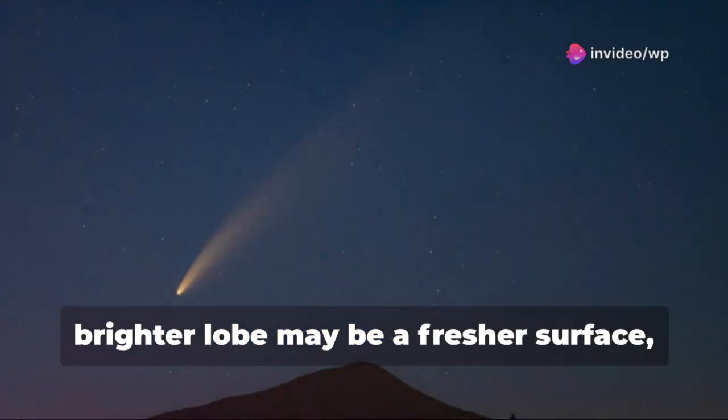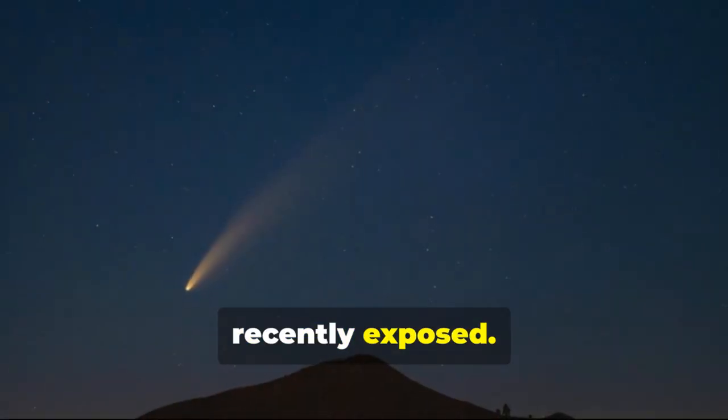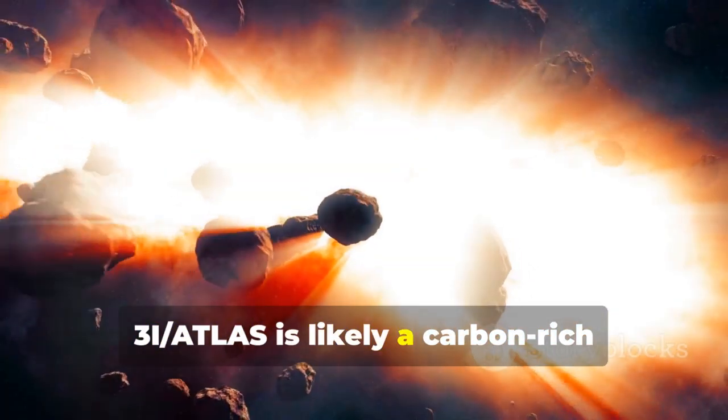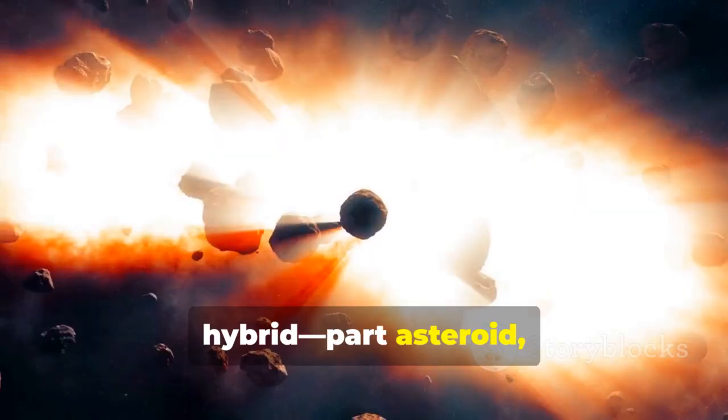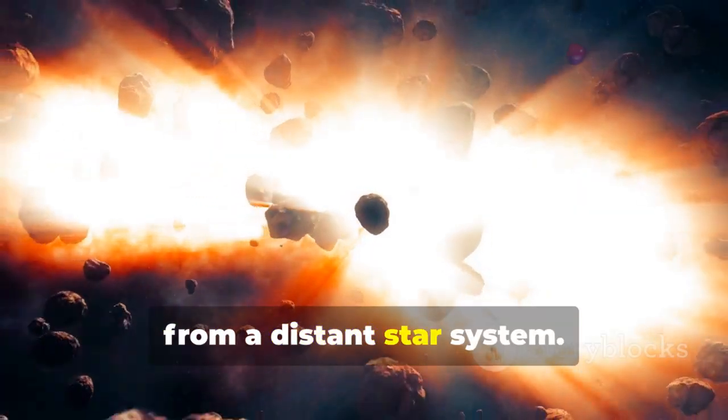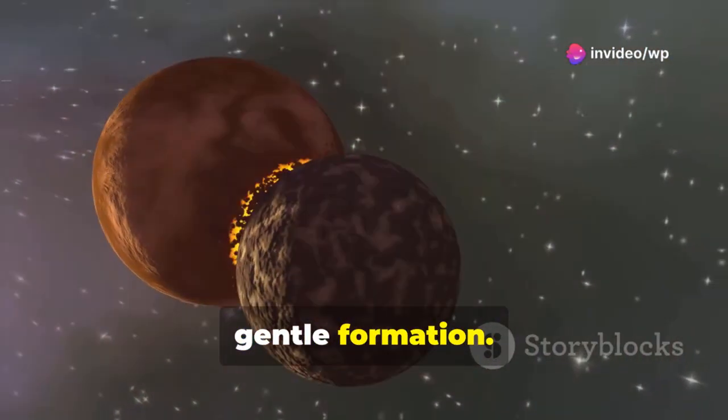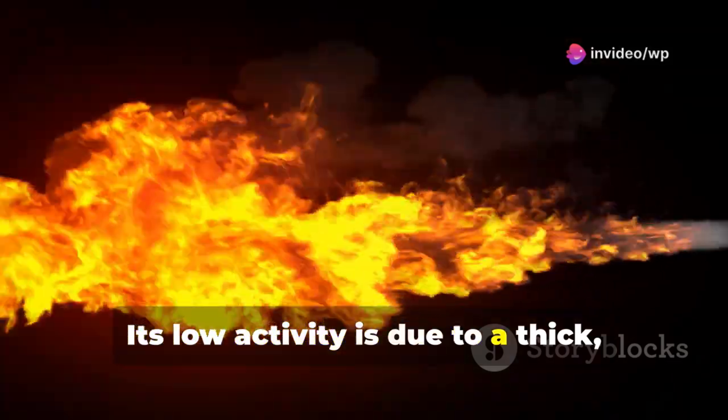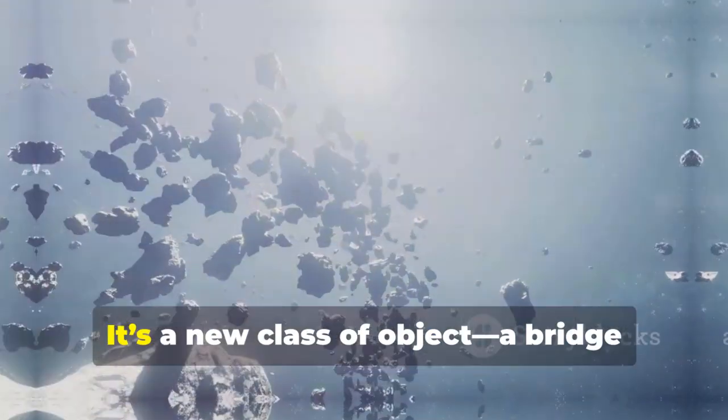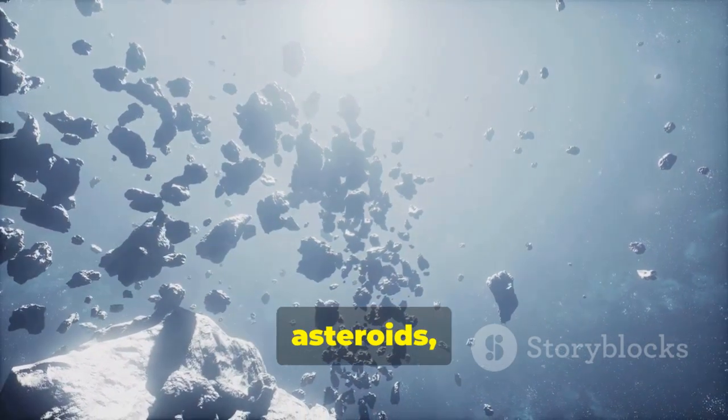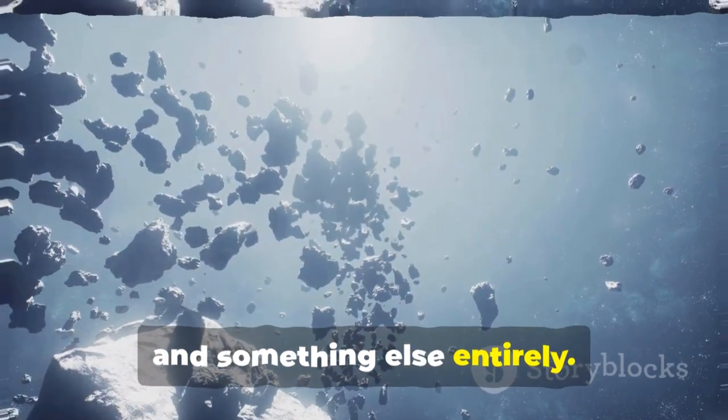The smaller, brighter lobe may be a fresher surface, recently exposed. 3I Atlas is likely a carbon-rich hybrid, part asteroid, part comet, from a distant star system. Its two-lobed structure is a relic of gentle formation. Its low activity is due to a thick, irradiated crust. It's a new class of object, a bridge between comets, asteroids, and something else entirely.